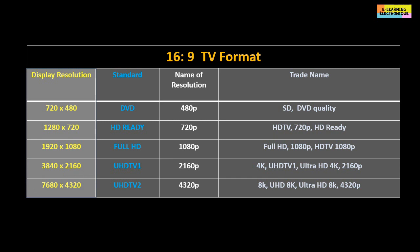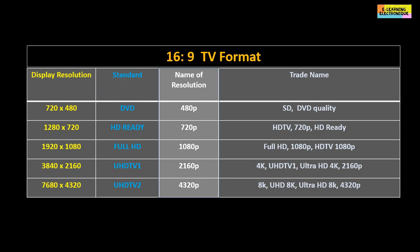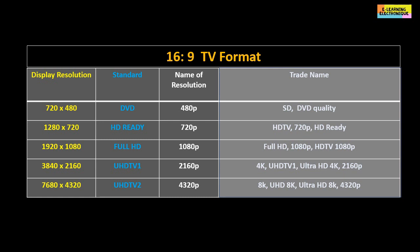This table shows various characteristics of 16:9 format televisions. For each television, the first column shows the display resolution — the quantity of pixels it contains. The second column shows the standard used; for example, a screen of 720 by 480 pixels corresponds to the DVD standard. The third column notes the name of the display resolution, using the number of pixels on the height followed by the letter P. The last column shows trade names; it is more telling for ordinary people to say a 4K TV than a UHD TV or 2160P TV.